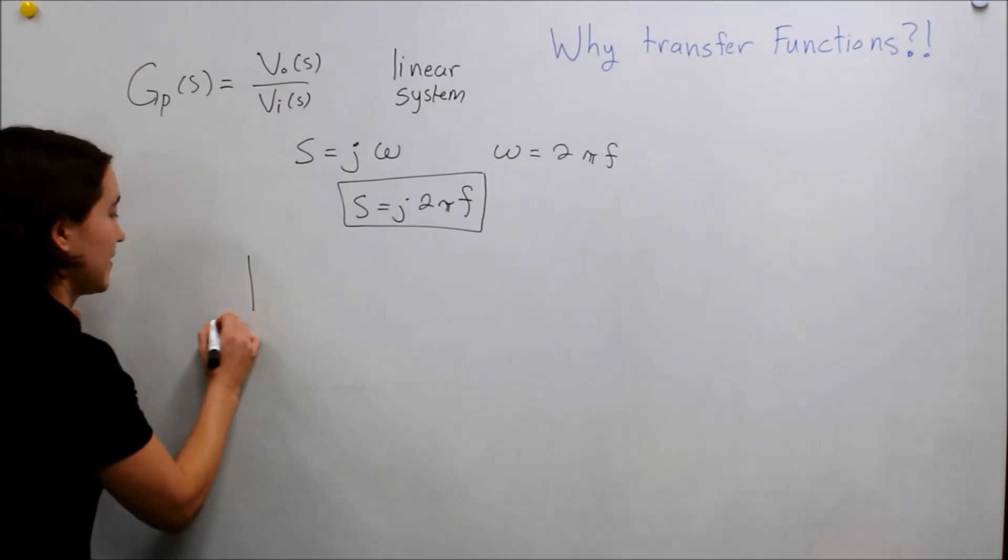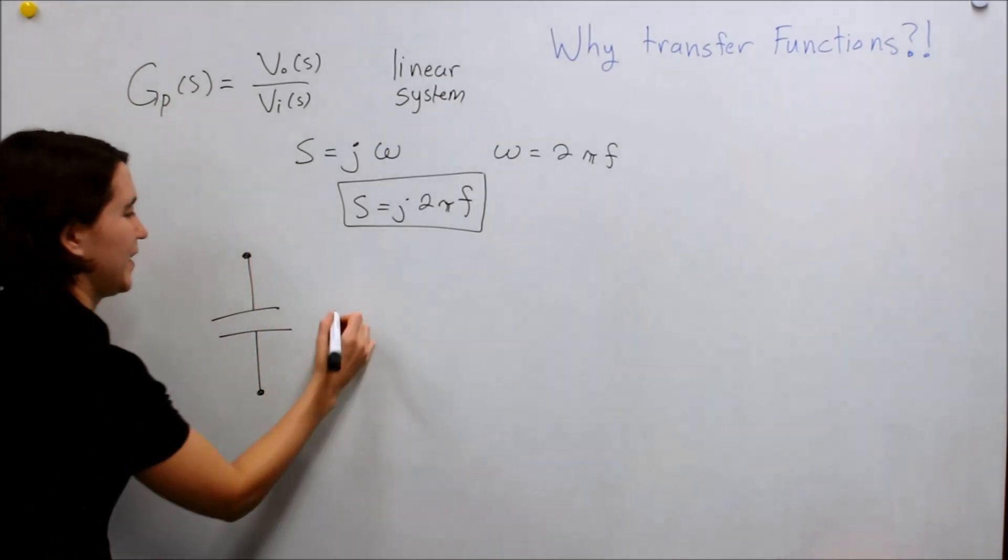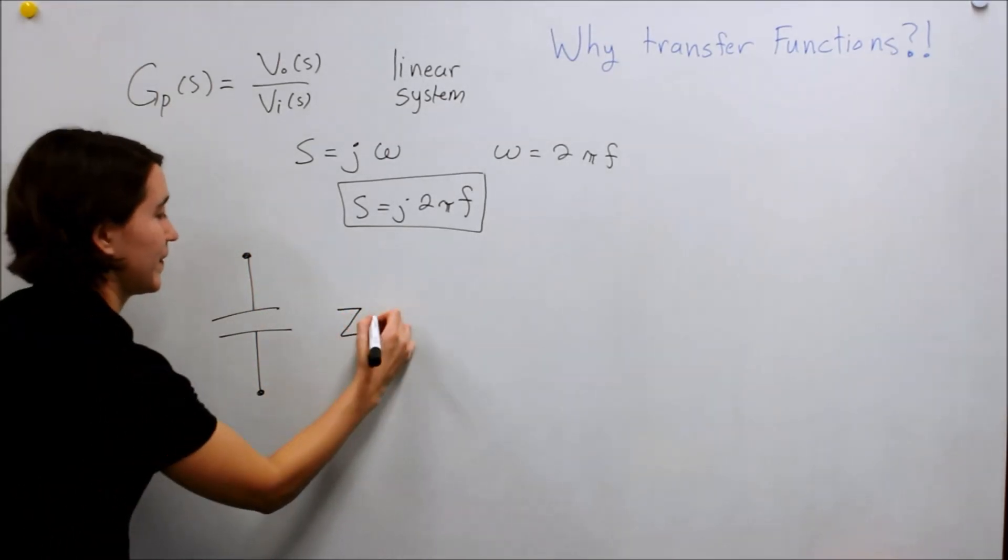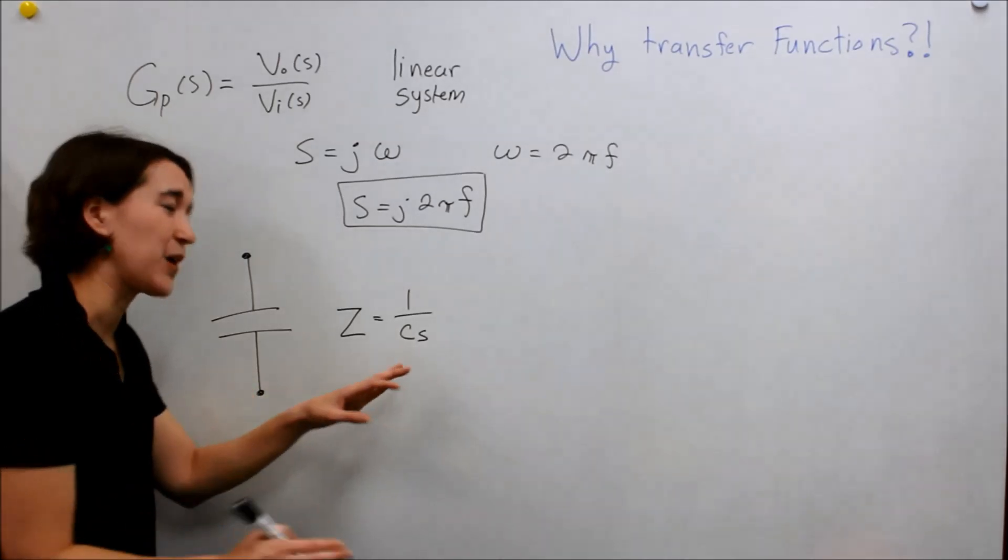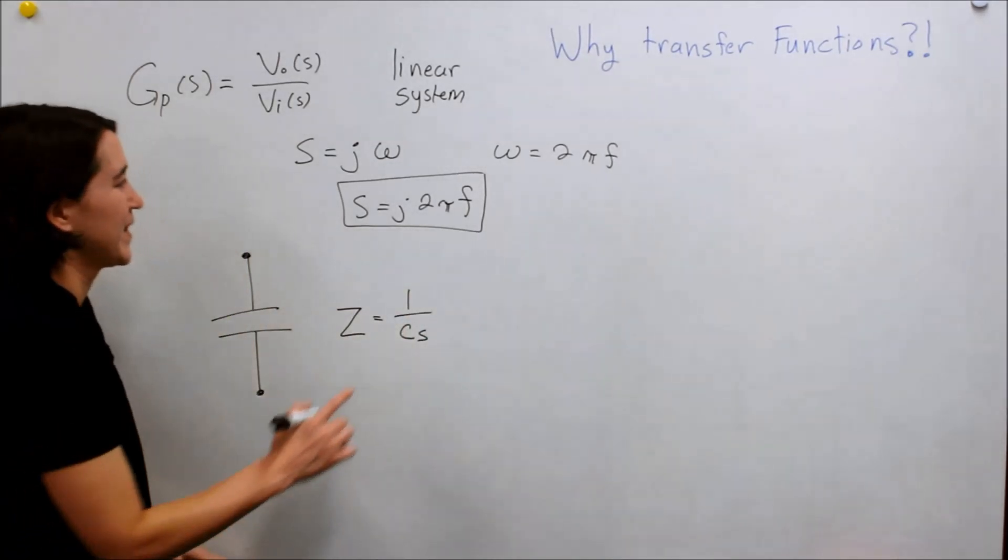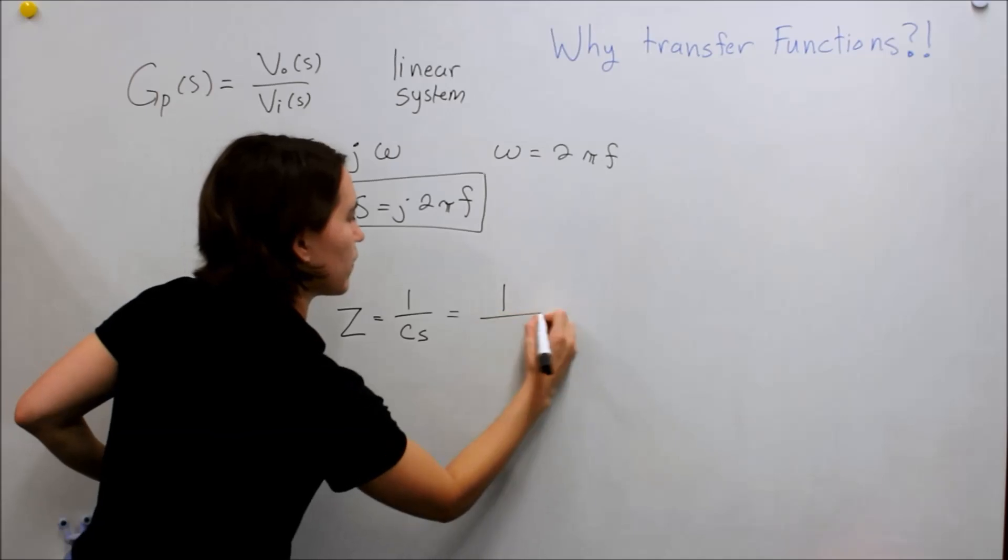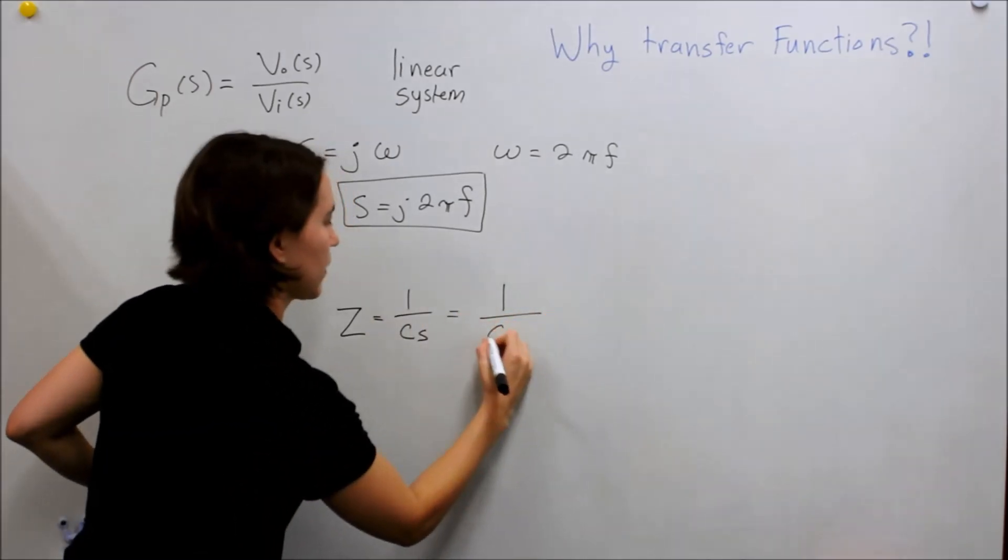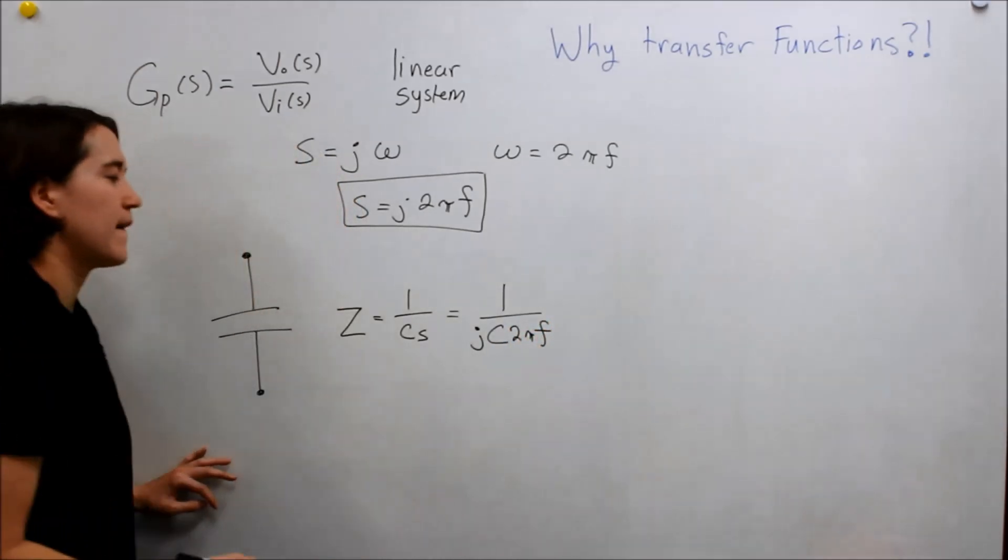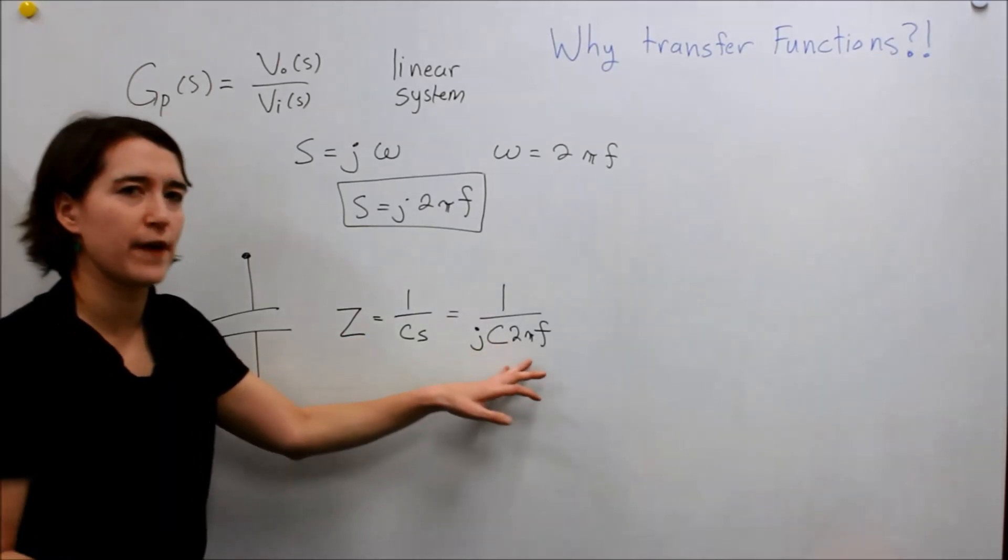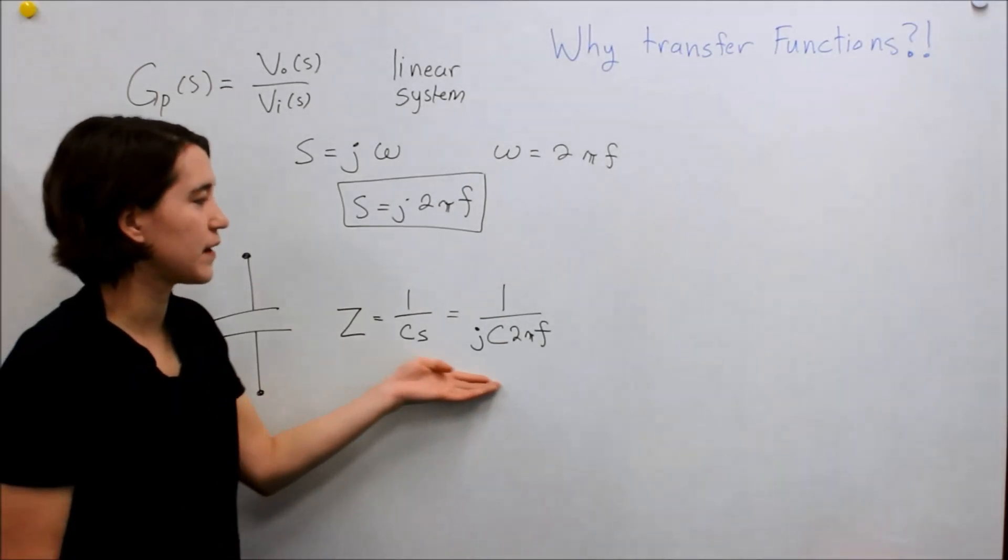So we're going to go back to our capacitor. I'm not going to re-derive everything. But if you recall, if we look at the impedance of this capacitor, it's going to be 1 over CS, right? So, and if you don't remember that, go back to one of the earlier videos where we derived that. So let's think about what this is. So let's just plug this in here and kind of think about it. So 1 over C, and then S is j2πf. And so we can look at how frequency affects the system. In this case, we're looking at the impedance. So we can see how frequency affects the impedance.